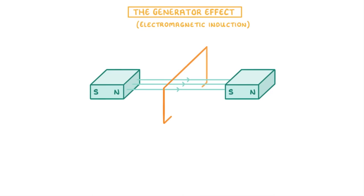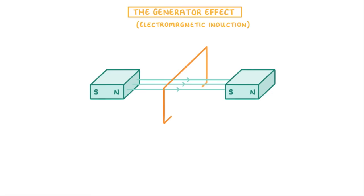Now, at the moment, we just have a piece of wire. We don't have an actual circuit. And so even though there's a potential difference, it can't generate any current.